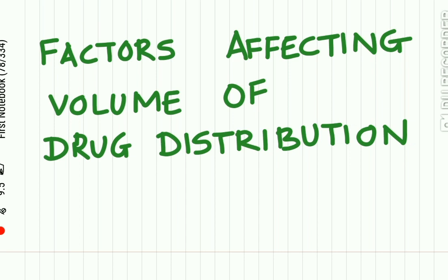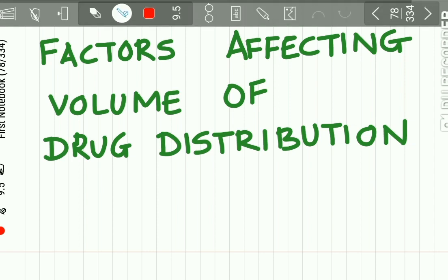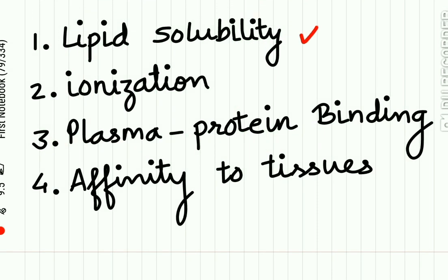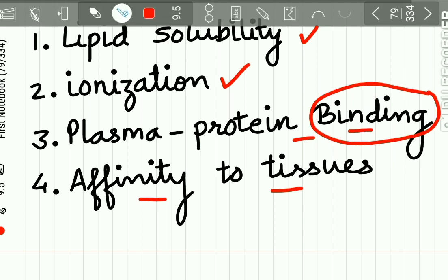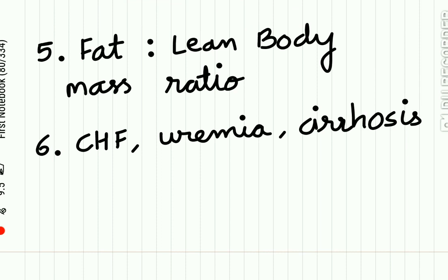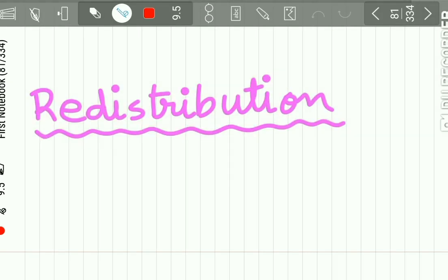Let us study the factors which affect the volume of drug distribution. First, the lipid solubility of the drug — the more the lipid solubility, the more is the volume of distribution. Then ionization of the drug. Then plasma protein binding — if the drug is highly present in bound form, distribution is less. Affinity of the tissues — if the affinity of the drug to tissues is more, there is faster distribution. Distribution also depends upon the fat to lean body mass ratio, and certain diseases like CHF, uremia, and cirrhosis also affect drug distribution.